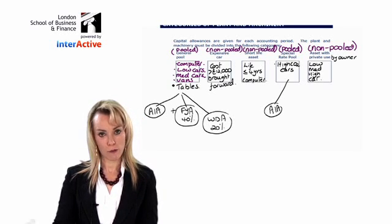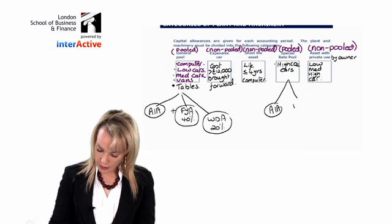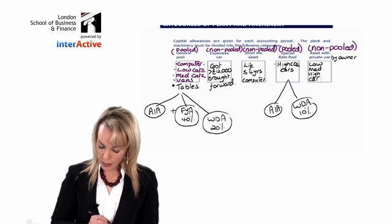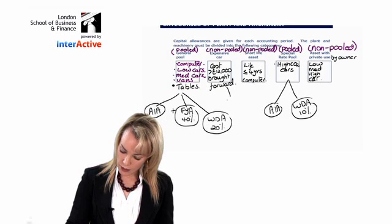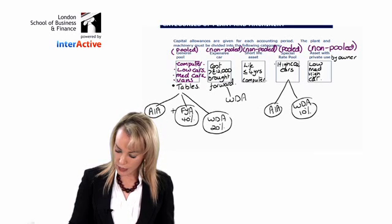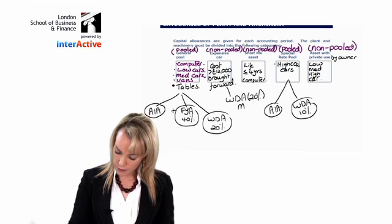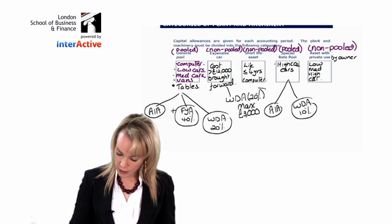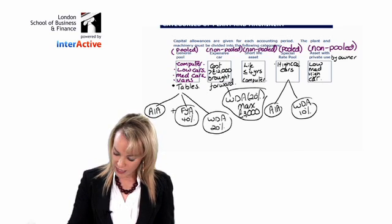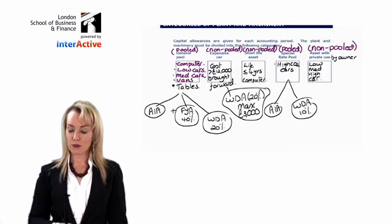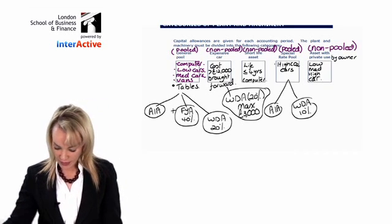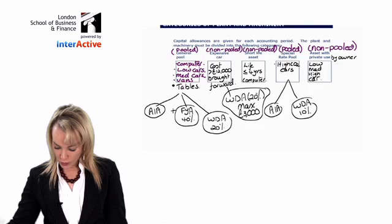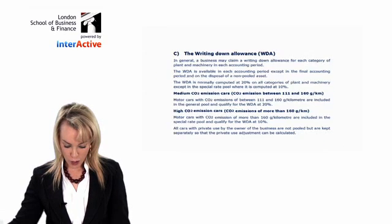Things in the special rate pool can get the AIA. They can't get the 40% FYA, but they can get the WDA at 10%. Expensive cars can get the WDA, but the rule is the maximum they can get is £3,000. So that's another little rule that you have to remember. So lots of rules, those are all the allowances that we need to know about.